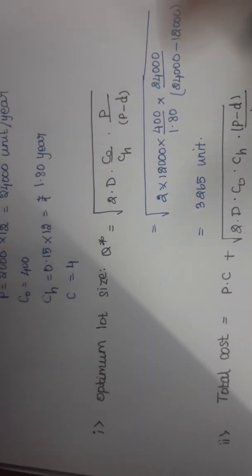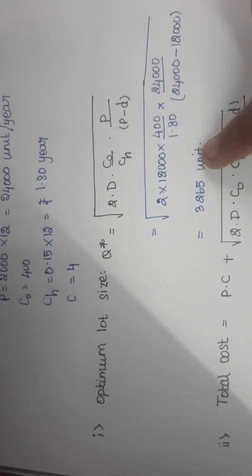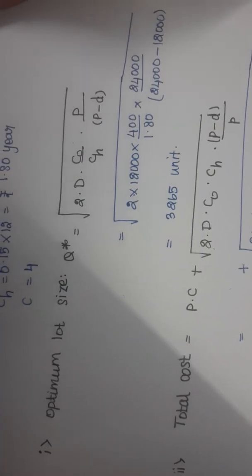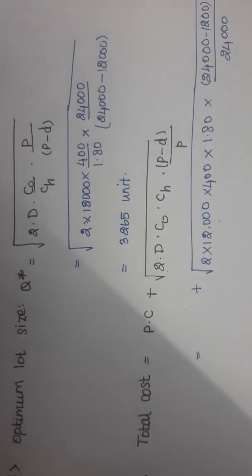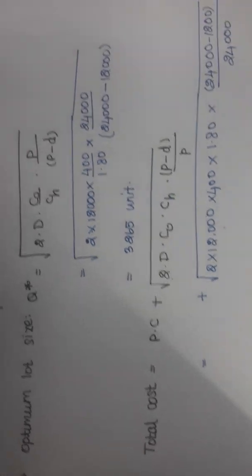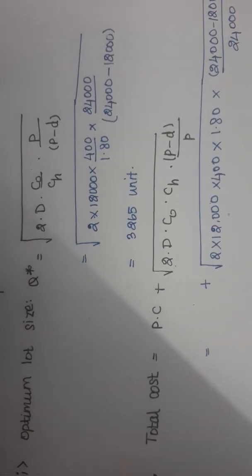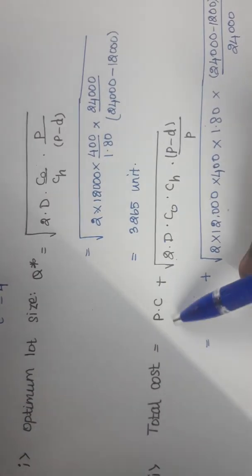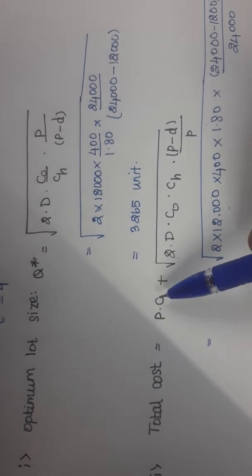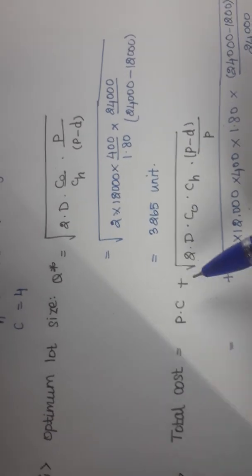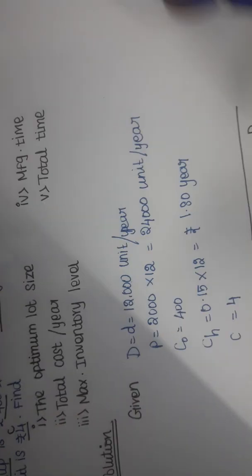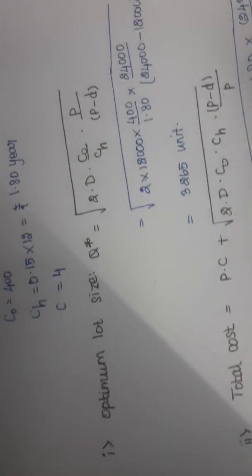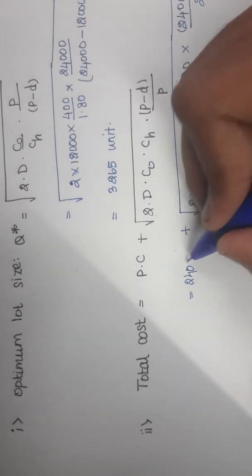I will apply the formula for the optimum lot size. Applying the EPQ formula, Q* comes out to 24,000 units.